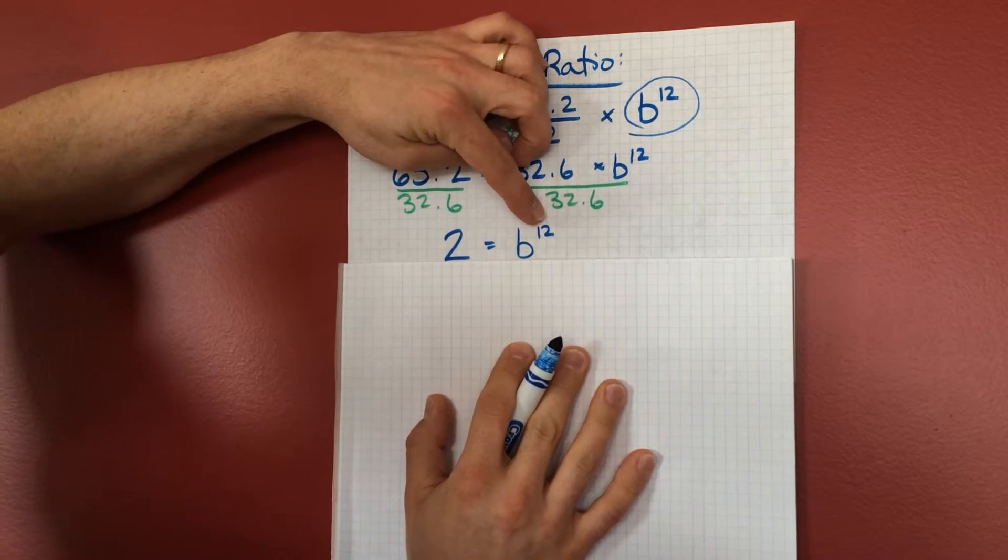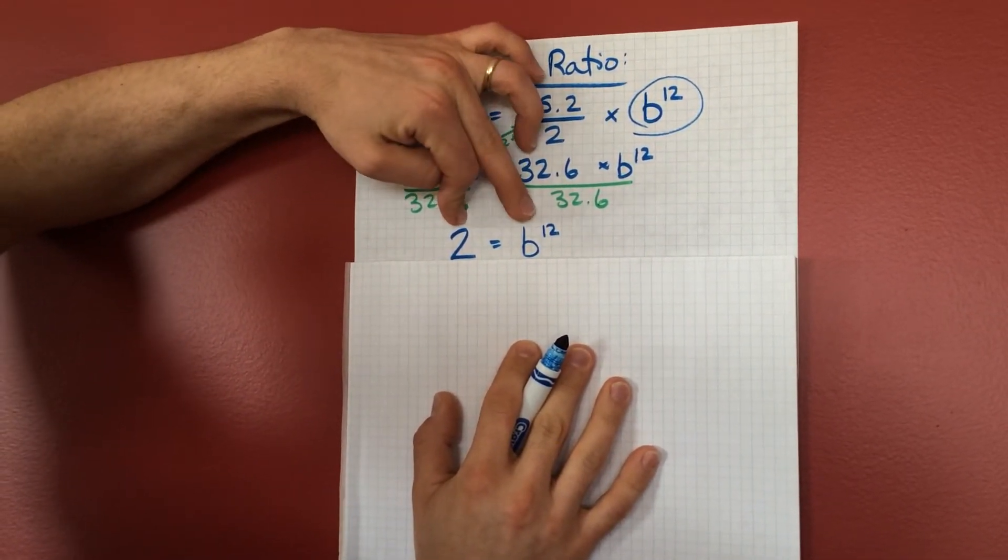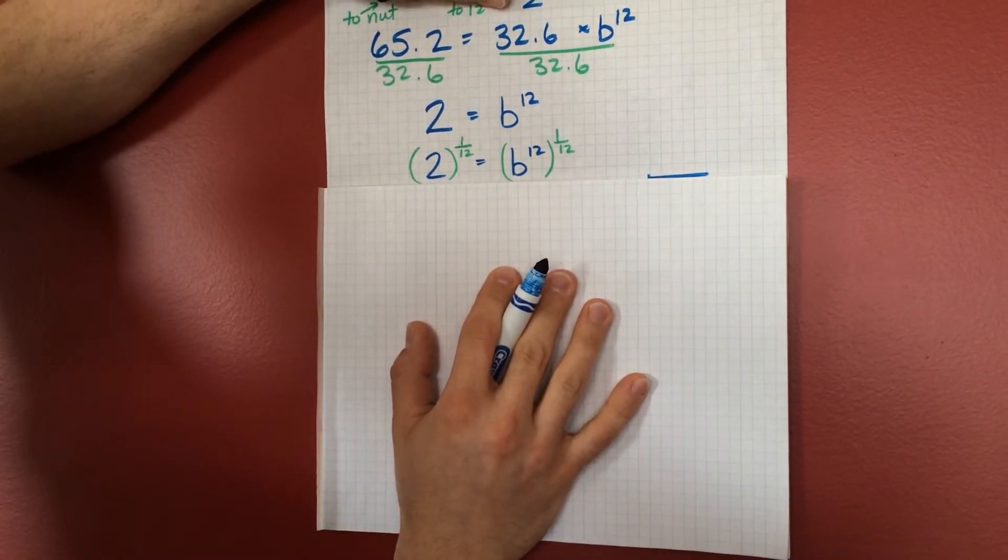That means that if I multiply by the same ratio 12 times, I should double the length of the string. To solve this, I'm going to raise both sides to the 1/12th power.